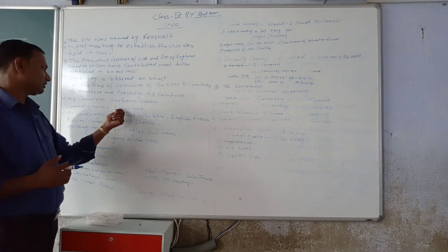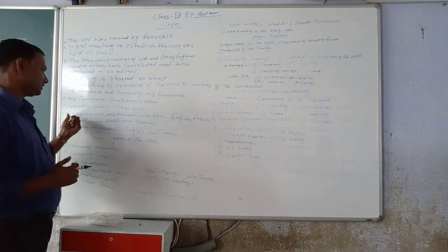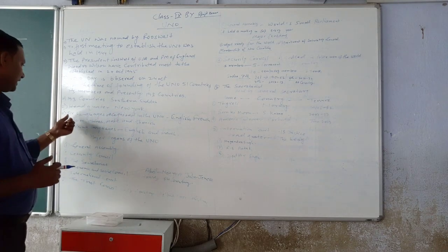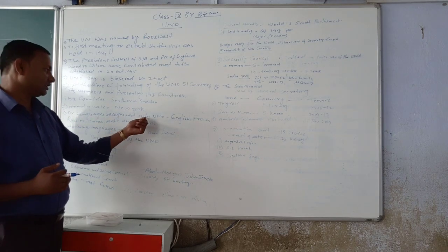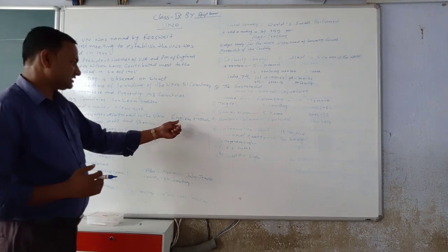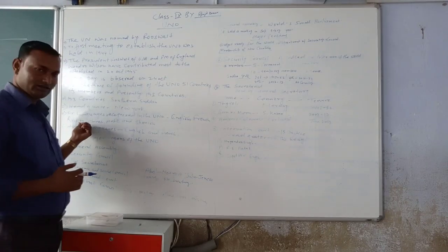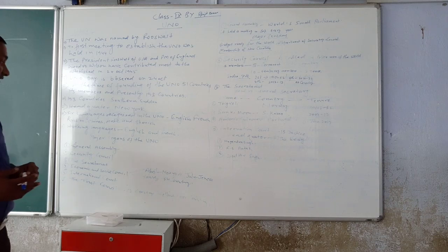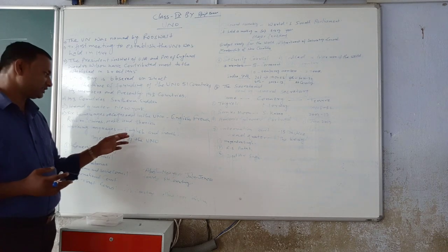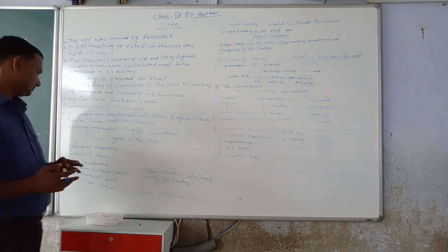And UNO's headquarters in New York. There are six official languages: English, French, Russian, Chinese, Arabic and Spanish. But working languages, there are two working languages, English and French.